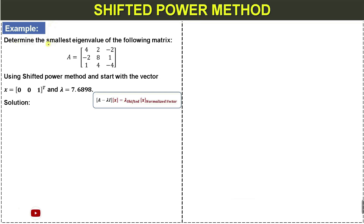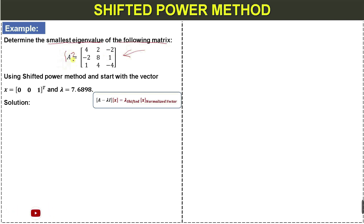We need to determine the smallest eigenvalue of matrix A using the shifted power method. We start with a given initial vector and the eigenvalue lambda equal to 7.6898, which is the largest eigenvalue of this matrix. Our goal is to find the smallest eigenvalue using the shifted power method.